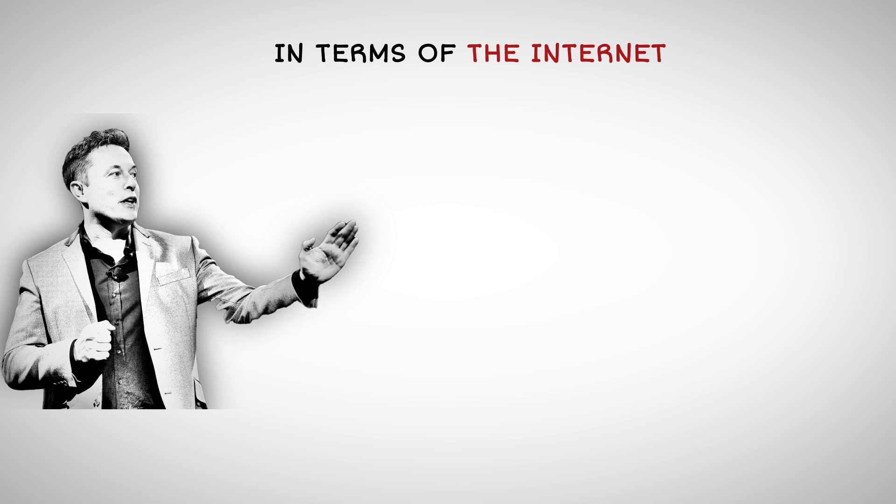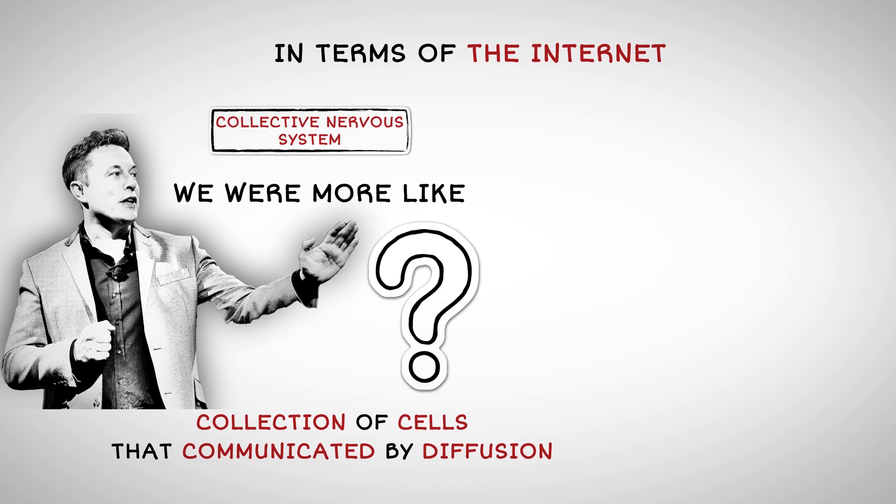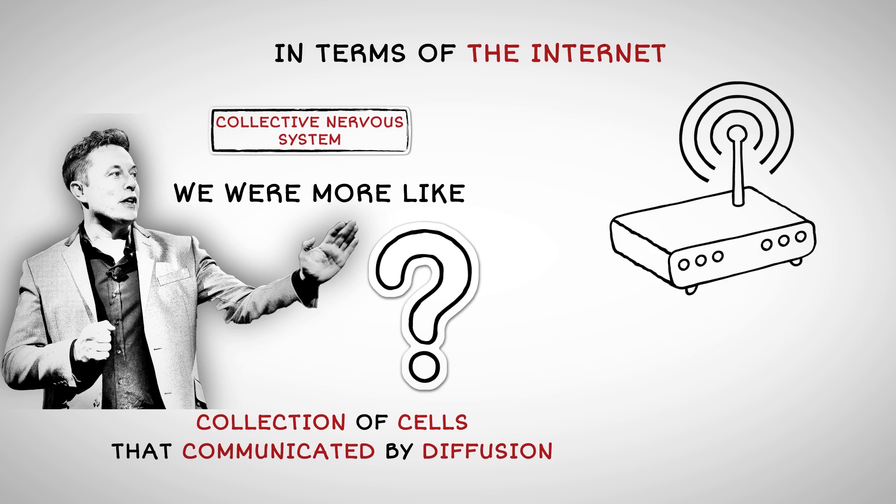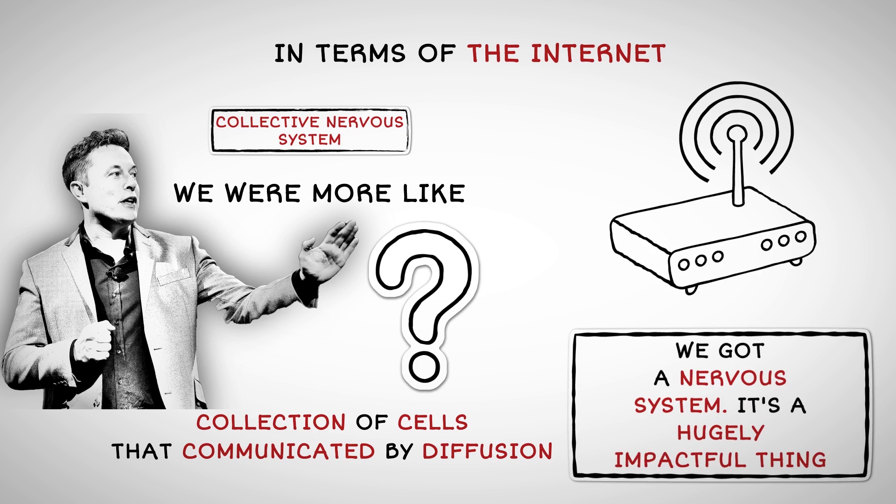In terms of the internet, it's like humanity acquiring a collective nervous system. Whereas previously, we were more like a collection of cells that communicated by diffusion. With the advent of the internet, it was suddenly like we got a nervous system. It's a hugely impactful thing.